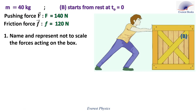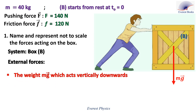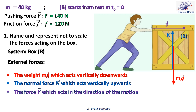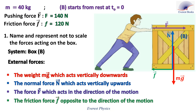Number one: name and represent (not to scale) the forces acting on the box. The system is the box. The external forces acting on the box are: the weight Mg, which acts vertically downwards; the normal force N, which acts vertically upwards; the force F, which acts in the direction of the motion; and the friction force, opposite to the direction of the motion.